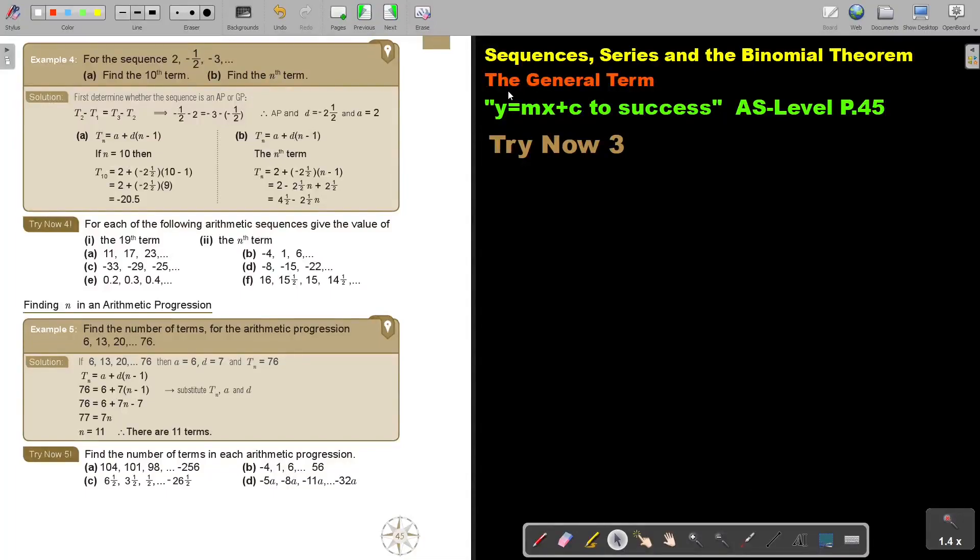In this video, we are going to continue with the general term of an AP. You will find this on page 45 in the Namibia AS level mathematics textbook, Y equals MX plus C to success. Let's look at another example, Example 4.